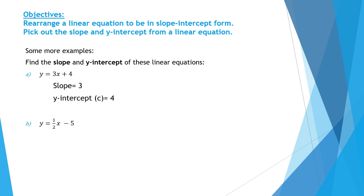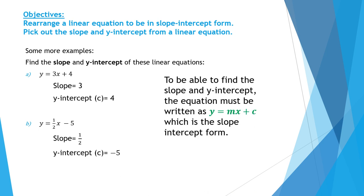Another example: y equals one-half x minus 5. The coefficient of x is one-half, which means that m, the slope, is one-half. The constant number is negative 5, which means the y-intercept is negative 5.